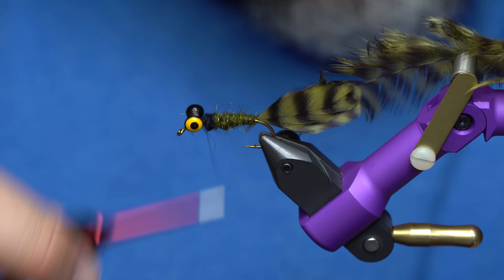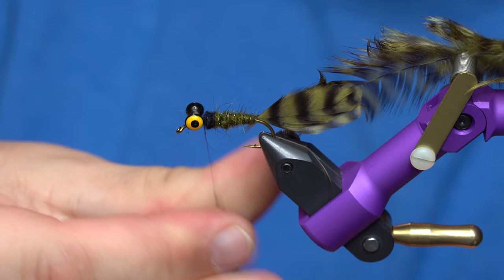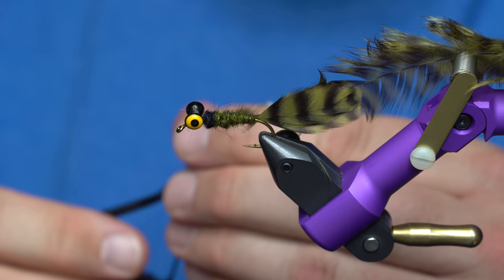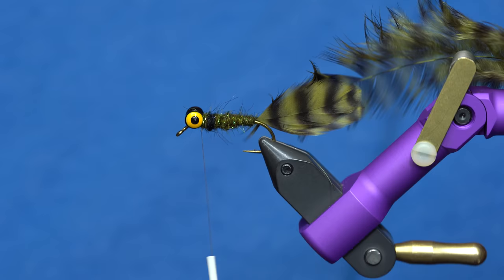And then, once you have that, you go back to your Sculpin Olive and wrap up right up next to those eyes. Dub those down tight. So that's the body.